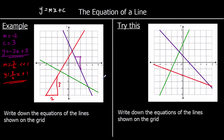And the green line: for every one it goes across, it goes down by half. Every two it goes across, it goes down one. So the change in y over the change in x is minus one half — a gradient of negative a half. And it crosses the y-axis at negative two. So it's y equals minus a half x minus two.